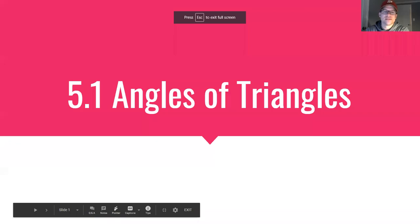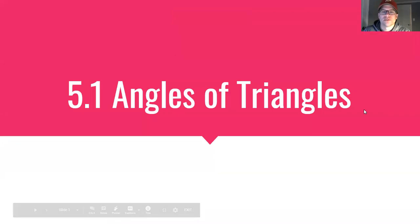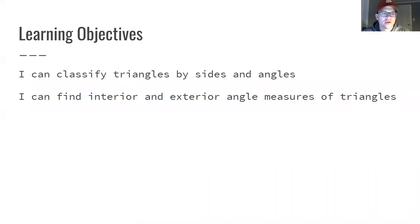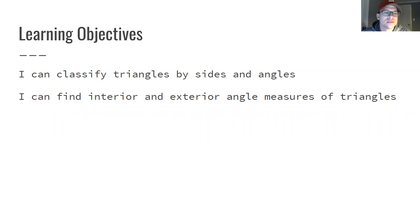This is a video tutorial for the Big Ideas Geometry book, section 5.1: Angles of Triangles. Two learning objectives are: you can classify triangles by sides and angles, and you can find interior and exterior angle measures of triangles.